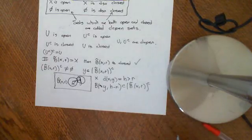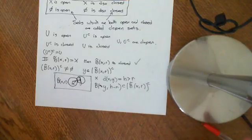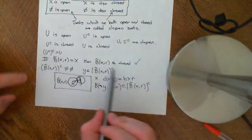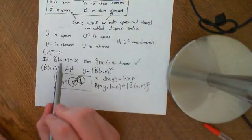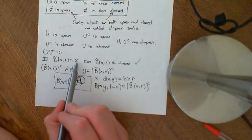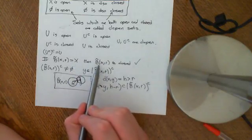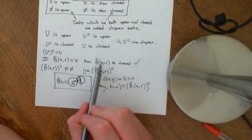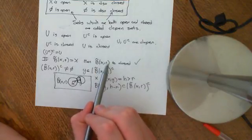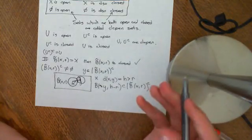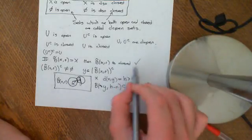Welcome back to this video in which we are proving that closed balls are in fact closed sets. We've got through the first scenario, which is that the closed ball is equal to the whole space X. In that case, we know that the closed ball must be closed because if you take its complement, it's the empty set, and the empty set by definition is an open set. So in that case, we're done.